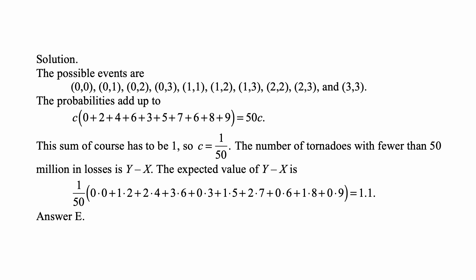The number of tornadoes with fewer than 50 million in losses is Y minus X. The expected value of Y minus X is 1 over 50 times (0 times 0 + 1 times 2 + 2 times 4 + 3 times 6 + 0 times 3 + 1 times 5 + 2 times 7 + 0 times 6 + 1 times 8 + 0 times 9).